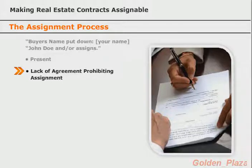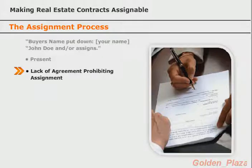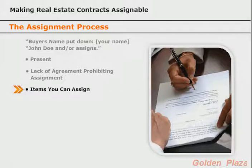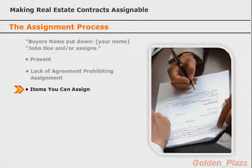A non-assignment clause allows the other party to sue for breach of contract if an assignment is made. An assignment of a contract containing such a clause will be ineffective if the assignee knows of the non-assignment clause or if the clause specifies that all assignments are void. An assignment must be in writing if it assigns wages, any interest in real property, collateral for a loan, or debt.